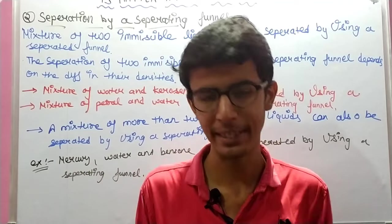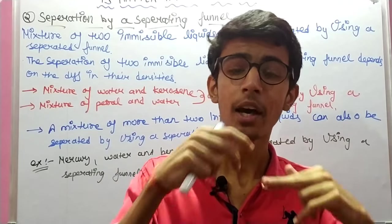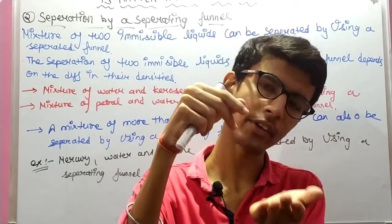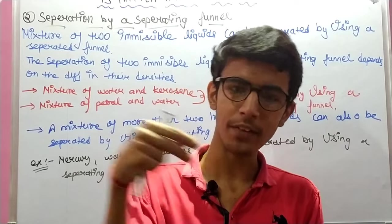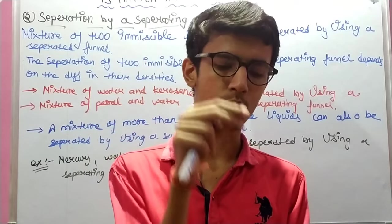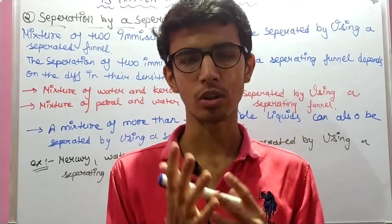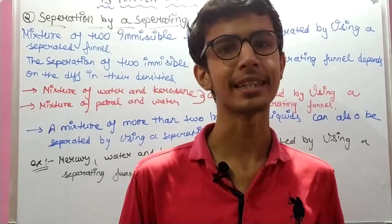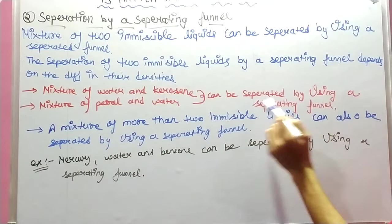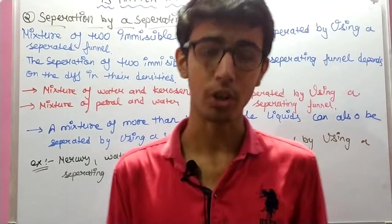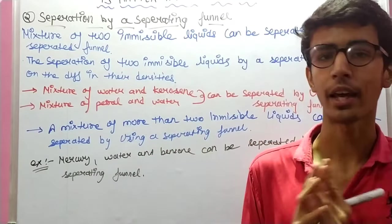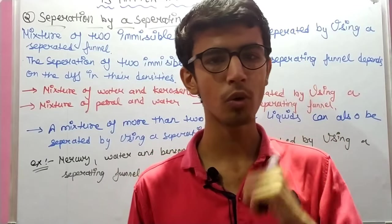We open the stopcock of the separating funnel and the heavier liquid flows out into a beaker first. Then we close the stopcock and collect the lighter liquid separately. For example, a mixture of water and kerosene: kerosene is lighter and forms the upper layer, water is heavier and forms the lower layer.